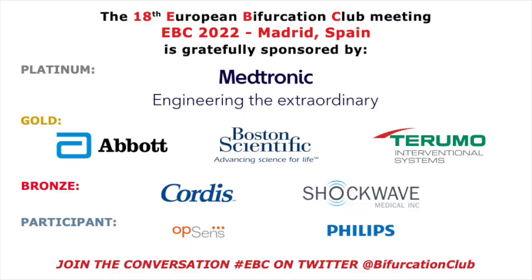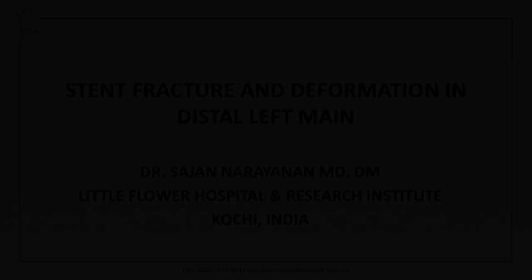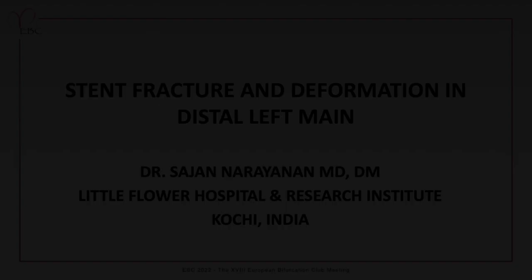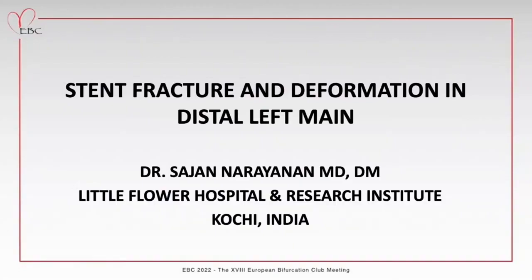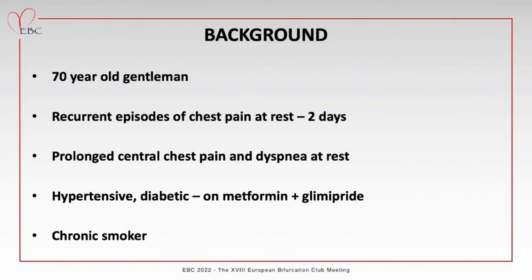The third case is 'Stent Fracture and Deformation in Distal Left Main,' presented by Cyan Narayanan. The 70-year-old gentleman presented with prolonged central chest pain and dyspnea at rest. He had multiple cardiovascular risk factors: hypertension, diabetes, and was a current smoker. ECG showed ST elevation in leads II, III, aVF and ST depression V1 to V6. Bedside echo showed hypokinesis of the entire inferior wall and inferolateral wall with estimated ejection fraction of 45%.